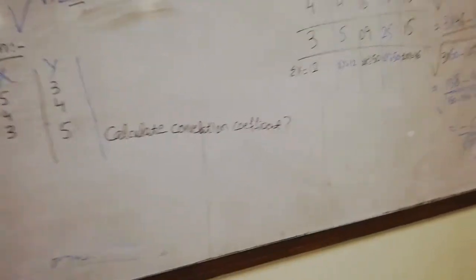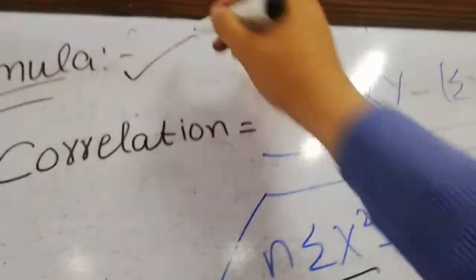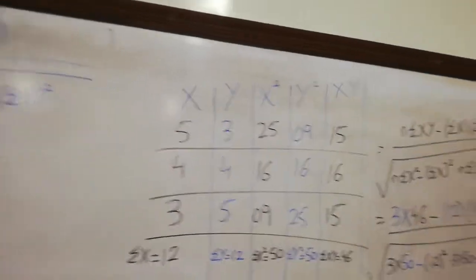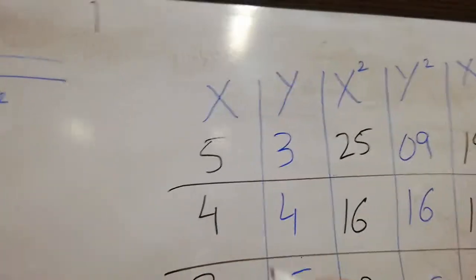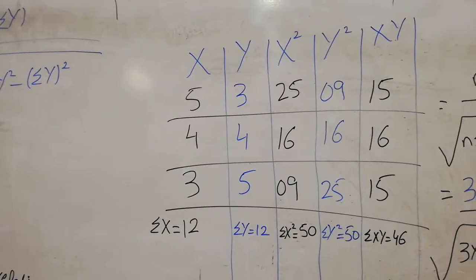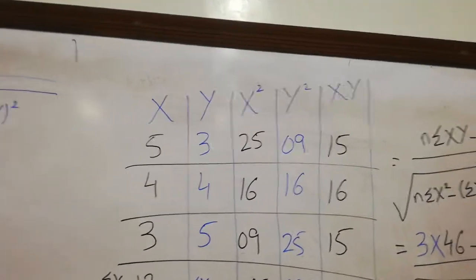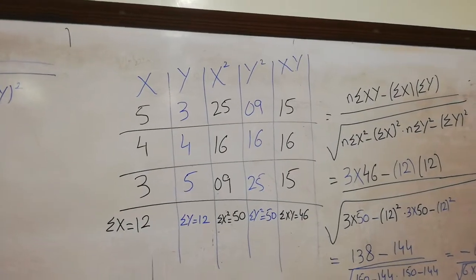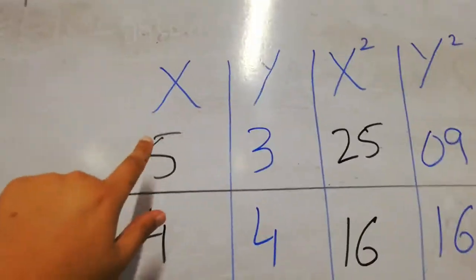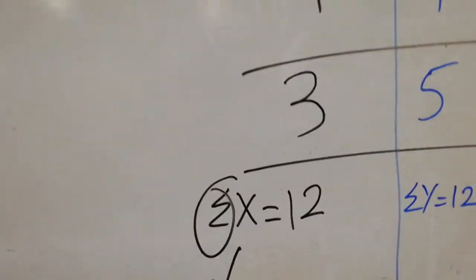Given X and Y values, calculate the correlation coefficient. Using this formula, I need five different columns: X, Y, X-squared, Y-squared, and XY. The X values given are 5, 4, 3 — copied as given. The Y values given are 3, 4, 5 — copied as given. X-squared: 5-squared is 25, 4-squared is 16, 3-squared is 9. Y-squared: 3-squared is 9, 4-squared is 16, 5-squared is 25. XY: 5×3=15, 4×4=16, 3×5=15.